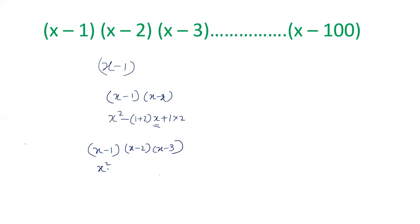If you multiply the first two you will get x square minus 1 plus 2x plus 2. So multiplication of first two brackets is this and now you have to multiply by x minus 3. So x square into x is x cube minus 3x square minus 1 plus 2x square. So when you take x square form and that will be 1 plus 2 plus 3 and so on.